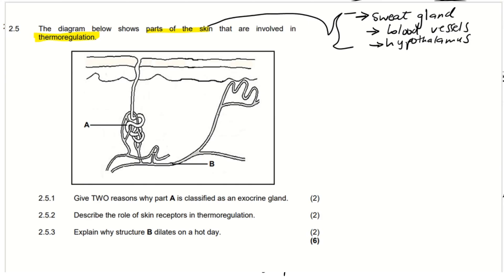Let us now try to make labels on this diagram to see which part is A and B. We can see that this is the surface of the skin — the top of the skin. There is a sort of hole or pore that allows something to come out, and we can see that this is sweat coming out to the surface. This tube carries the sweat, so A has to represent the sweat gland, because it is a tube that leads to the surface of the skin and releases something there.